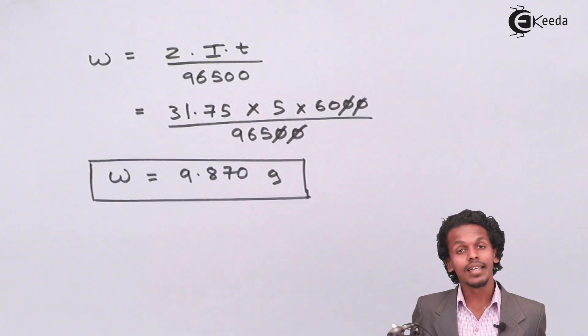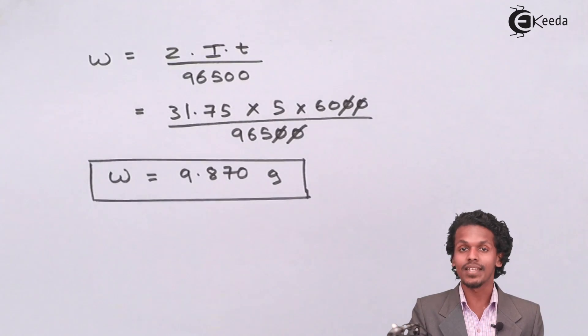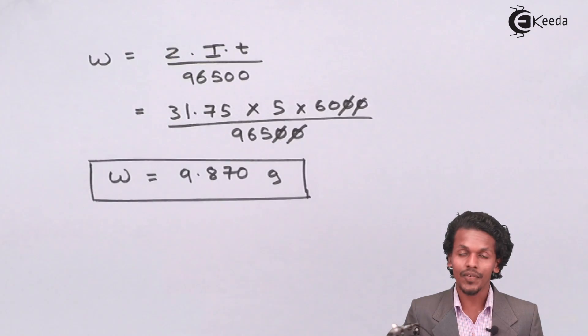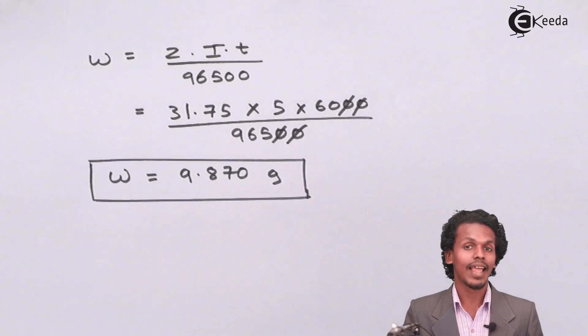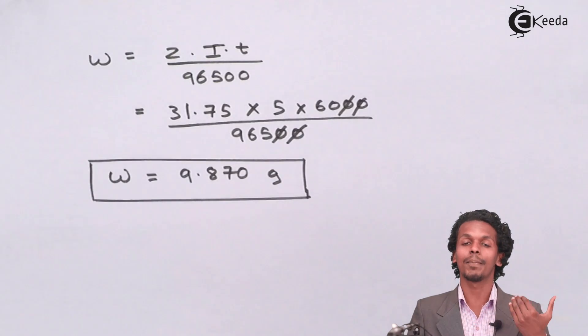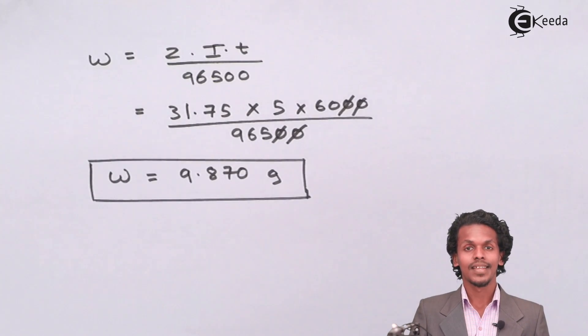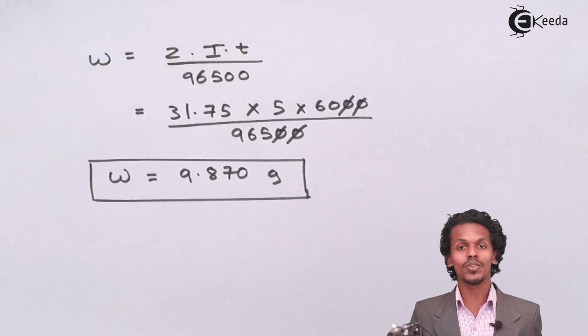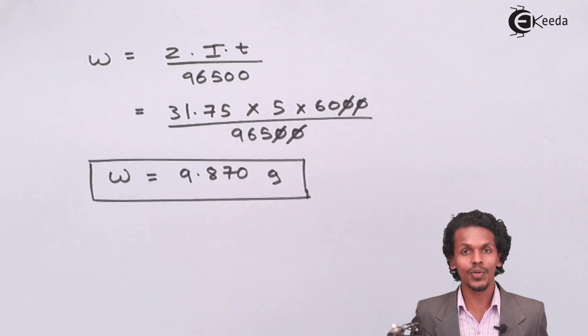This is how we have calculated the weight of a particular substance, in this case copper when present in copper sulfate solution and electrolysis has happened. This tells us how much copper has been deposited on a particular electrode. This was very easy, based on Faraday's first law.